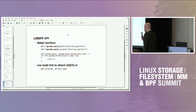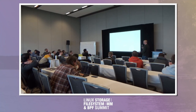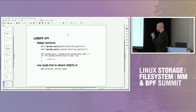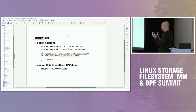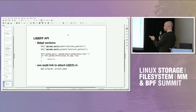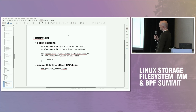The last change in libbpf is that the function that attaches USDT probes will detect if it can use the u-probe multi-link interface and use that instead of the current single u-probe approach. Effectively, when you use that function and the kernel has support for the new link, it will attach the USDT probes using u-probe multi-link.